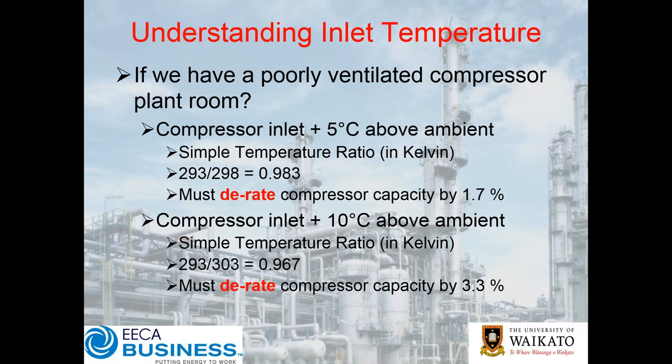If you superimpose over the top of that a poorly ventilated compressor plant room — maybe an inlet temperature that's 5 degrees above ambient — what does that do in terms of the performance of the compressor? The air is obviously hotter, less dense, so every litre of air the compressor is sucking in is going to be that much less air in terms of mass flow. A simple temperature ratio in Kelvin gives you 293 over 298, so 0.983 — even just 5 degrees above ambient is nearly a 2% derating on the compressor.